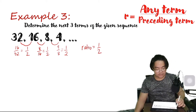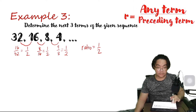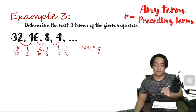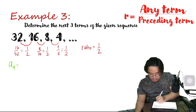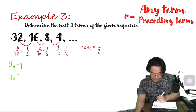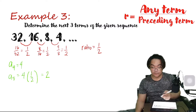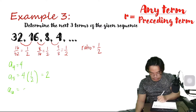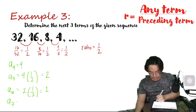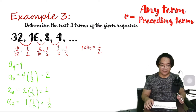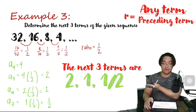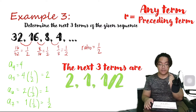So to get the next terms, all we have to do is multiply the fourth term with the common ratio 1 half. Since a sub 4 is equal to 4, therefore a sub 5, the fifth term, is 4 times 1 half, which gives us 2. A sub 6 is 2 times 1 half, which gives us 1. And the seventh term is 1 times 1 half, which gives us 1 half. Therefore, the next three terms are 2, positive 1, and 1 half.